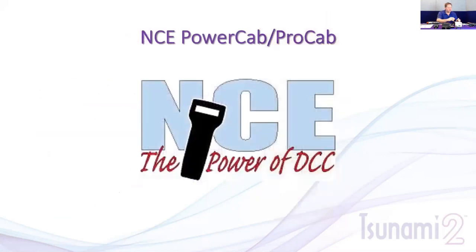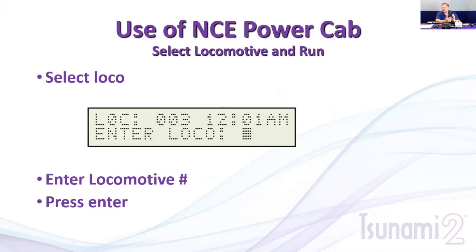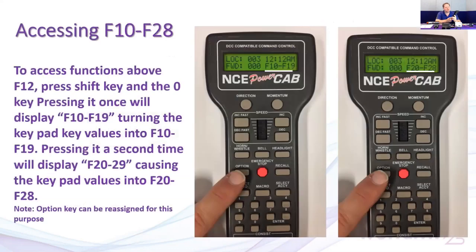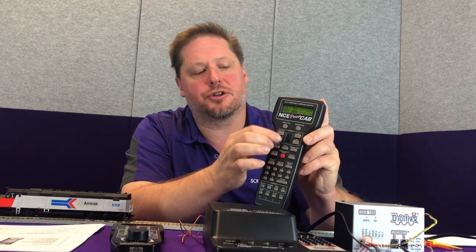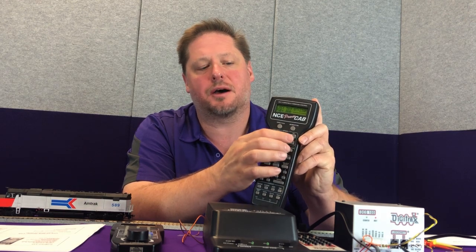The last system we'll cover is NCE. I have a Power Cab here, which is essentially the same as the Pro Cab — the two are virtually identical. The difference is the Power Cab includes the DCC system and booster in the throttle itself, sending power to the track as well. To get started, push the select loco button, the screen shows 589, hit enter, and we have full control of the decoder.